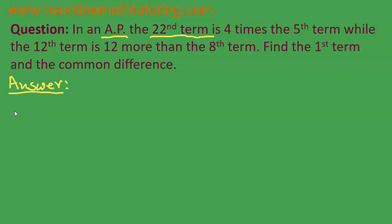We know that the general term formula for any arithmetic sequence is un equal to u1 plus n minus 1 times d, where un is the nth term, u1 is the first term, n is the term number, and d is the common difference.